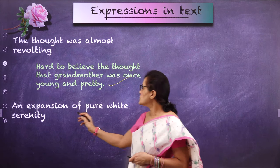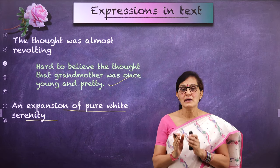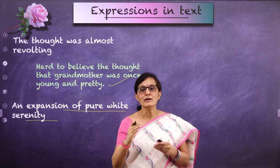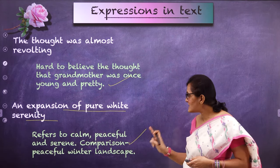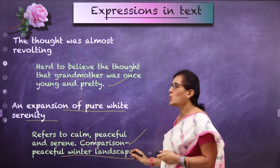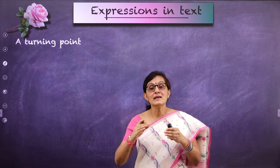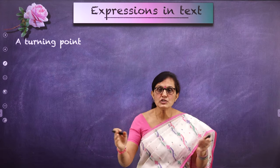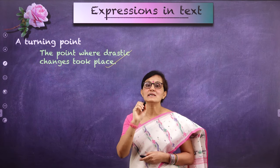'Expansion of pure white serenity' is a comparison of a winter landscape. Expansion means something which is spread out. A winter landscape looks full of peace and calmness — so it refers to something calm, peaceful, and serene. Here, the author compared the looks of his grandmother to a peaceful winter landscape. Next, 'a turning point' — a turning point is where drastic changes happen. There was a situation where there was a turning point in the relationship between the grandmother and the author.